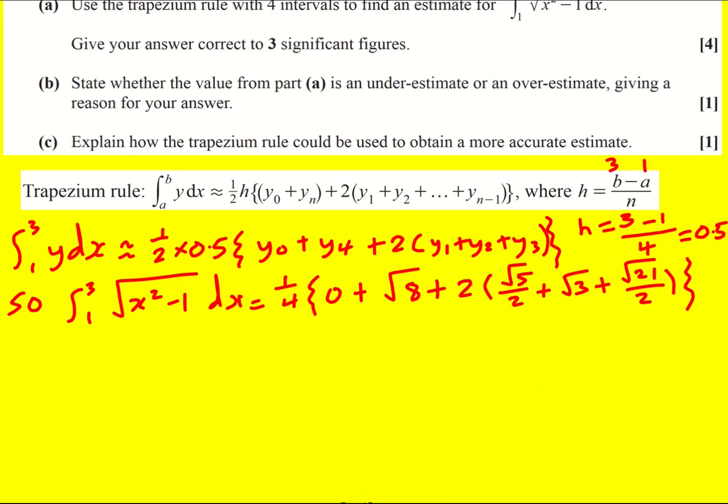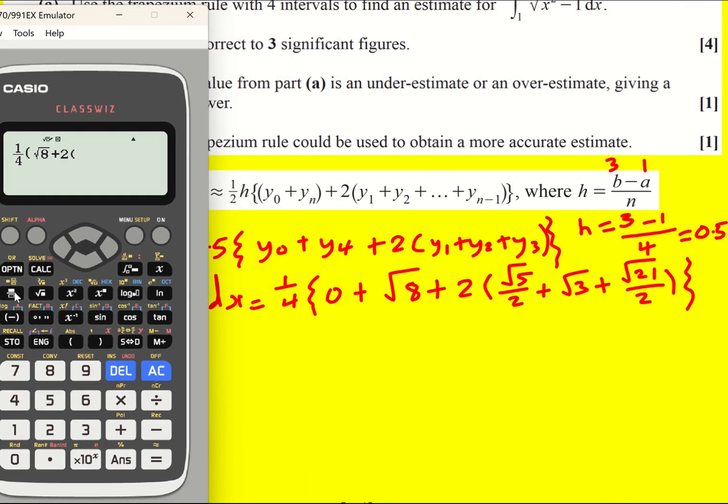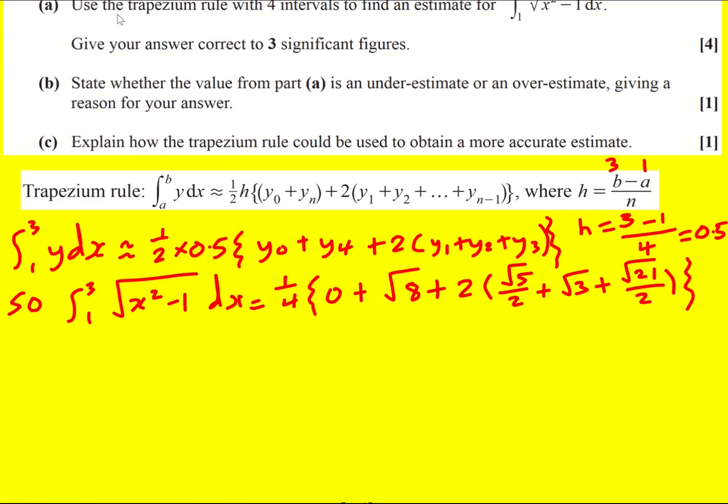And then just carefully put it in your calculator like that. 3.277, and there's another 7.